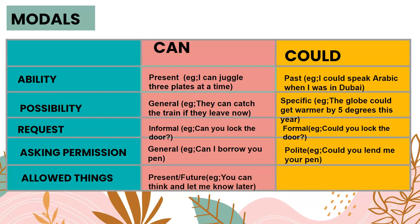We also use can to talk about things which are allowed, in both present and future tense. For example: You can think and let me know later — here can is used with a future reference. Could is always used as past — for example: We could take two leaves a month at work last year. This means there was a time when you were allowed to take two leaves, even if that's not the case now.